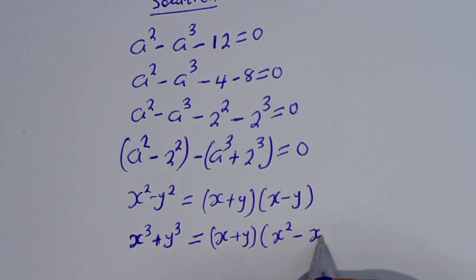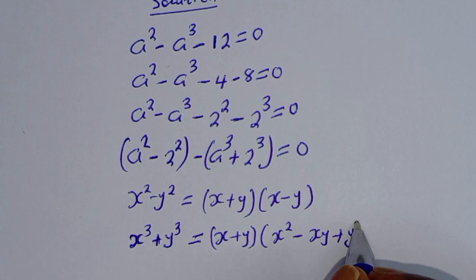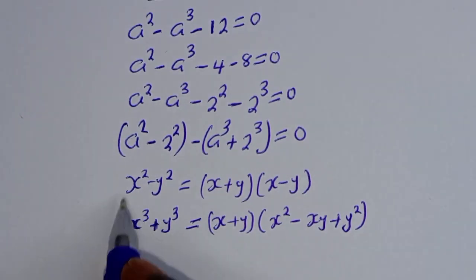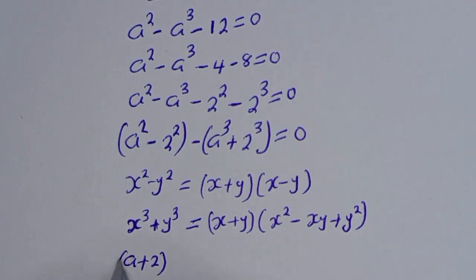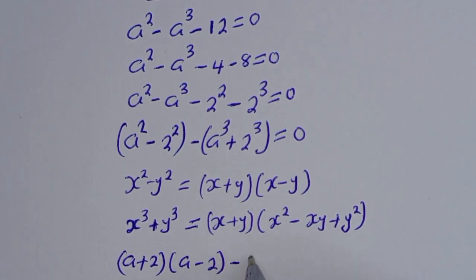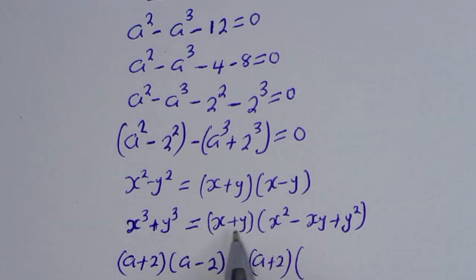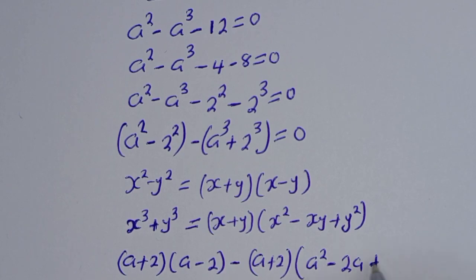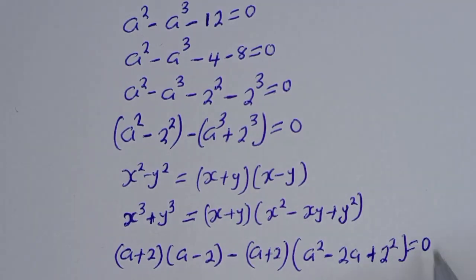Applying these identities, we get (a + 2)(a - 2) minus (a + 2)(a squared minus 2a plus 4) equal to 0.